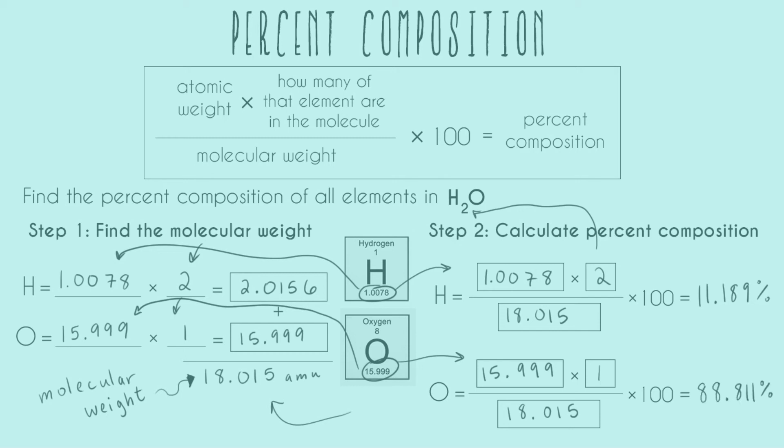Just a couple of notes on percent composition here. One good double-check for these problems is to make sure your total adds up to 100%. At the end of the problem, every single element needs to add up to 100% of the total weight. Here we can see that if we add up our two numbers, 11.189 and 88.811, that gives us 100%, so we've done that correctly.